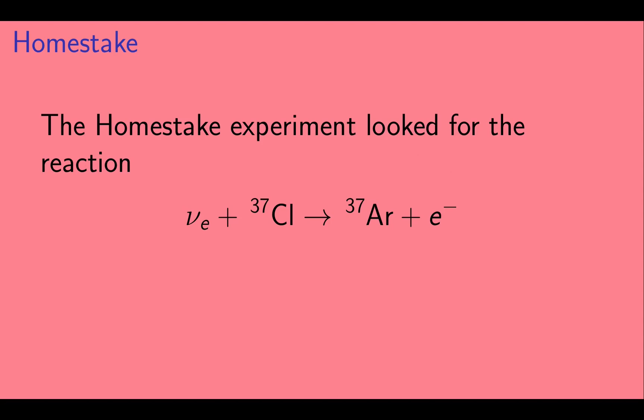They looked for this reaction. An electron neutrino interacts with a chlorine-37 nucleus, turning it into an argon-37 nucleus and releasing an electron. Chlorine-37 contains 17 protons and 20 neutrons. Argon-37 contains 18 protons and 19 neutrons.